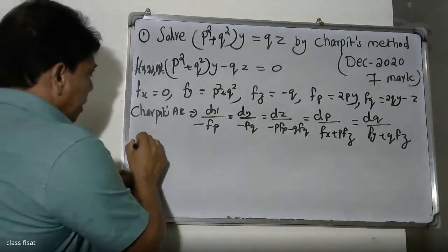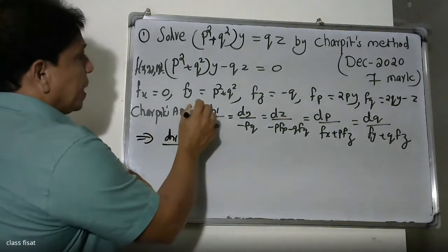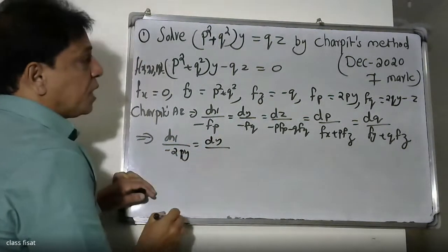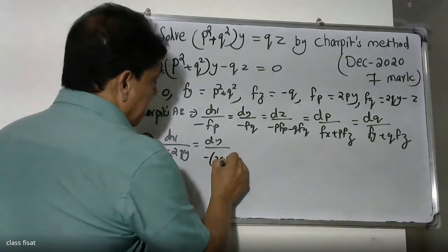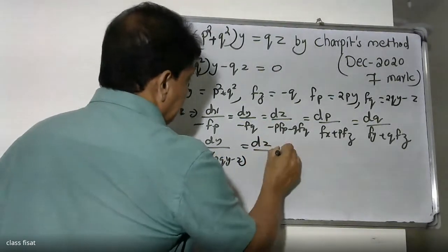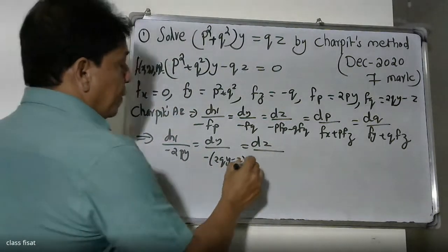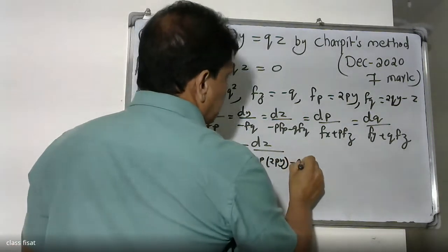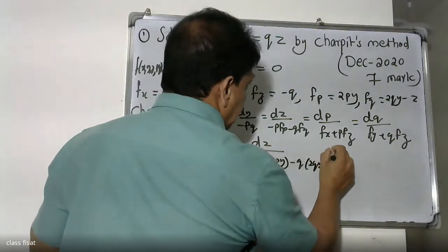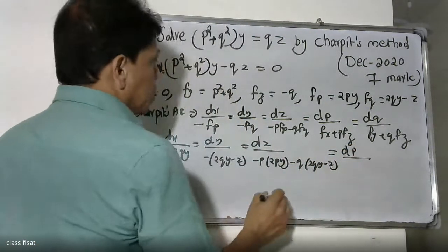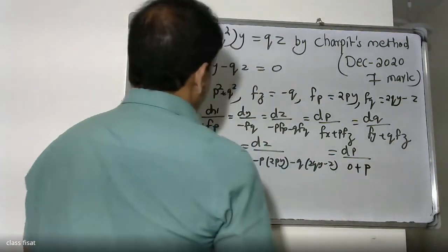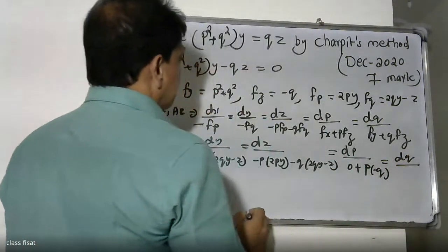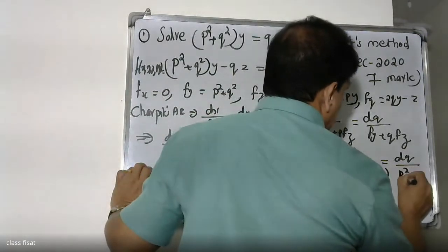Substituting the values: dX over Fp gives 2py; dY over FQ gives 2QY minus Z; dZ over minus p·Fp gives minus p into 2py; minus q into FQ gives 2QY minus Z; dp over Fx gives zero; dq over Fy gives p squared plus q squared.